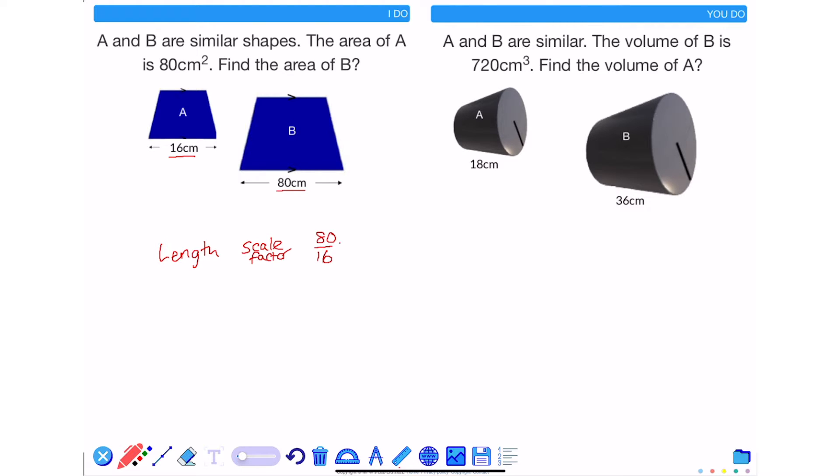80 divided by 16 is 5, and because I divided the length of B by the length of A and got 5, I now know that shape B is 5 times larger than shape A.